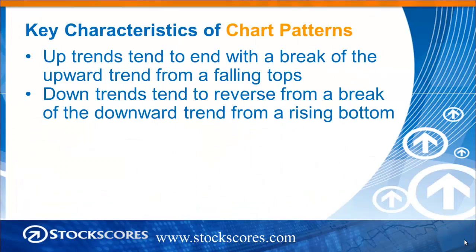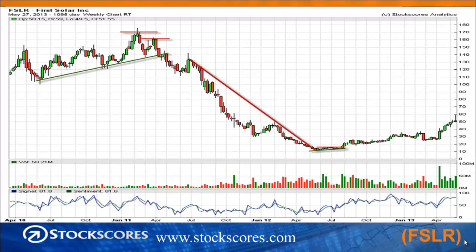Uptrends tend to end with a break of the upward trend line, but usually from a falling top. It's not very often that we see a break just of the upward trend line — it usually comes after a falling top, and this is very typical in patterns of indexes like the S&P 500 and the TSX 60. Downward trends also tend to reverse after a break of the trend line, but in this case from a rising bottom. If you get a break of the trend line after a rising bottom has formed, you are more likely to see a trend reversal.